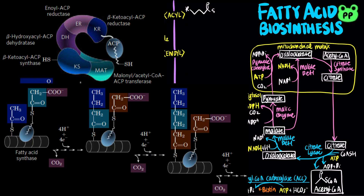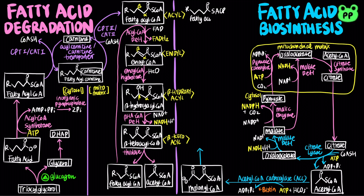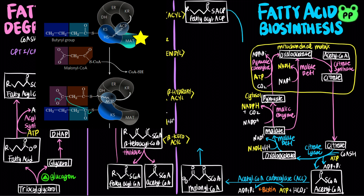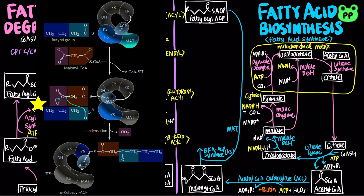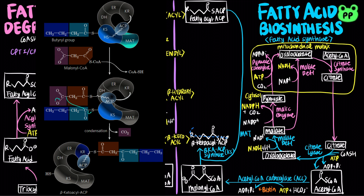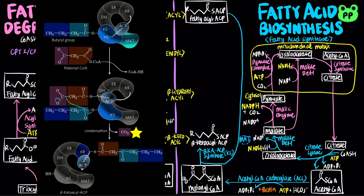Similar to beta-oxidation, fatty acid biosynthesis adds acyl groups two carbons at a time. For each round of fatty acid biosynthesis, malonyl-acetyl-CoA-ACP transferase (MAT) transfers an incoming malonyl-CoA to ACP, releasing free coenzyme A. The malonyl group then condenses with the growing fatty acyl-ACP by the enzyme beta-ketoacyl-ACP synthase (KS), releasing a molecule of carbon dioxide from the existing fatty acyl group. Since the 3-carbon malonyl group is added and one carbon dioxide is released, these two reactions result in a net addition of two carbons to the growing chain.